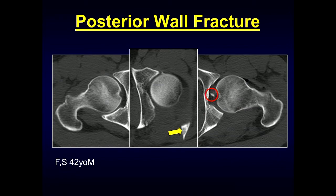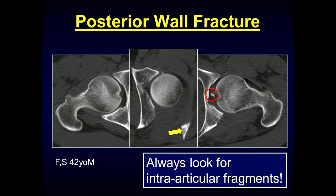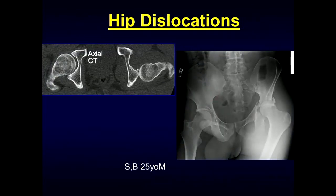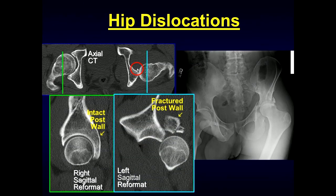Always look for intraarticular fragments following dislocation injuries. In this patient with a posterior hip dislocation, we see a small intraarticular fragment. Comparing the right to the left side, there is a comminuted fracture of the posterior wall, and the femoral head remains in contact with the posterior acetabulum, which has prevented reduction.